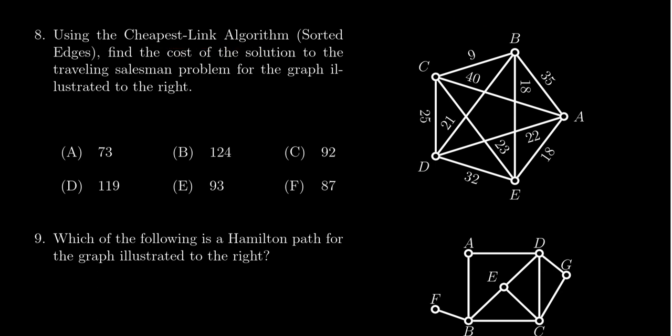We're going to look for the cheapest links on the graph, avoiding any premature circuits when possible. The cheapest link I can see here is C to B, which is worth 9. I'm just going to write this down as I go: 9 plus something.